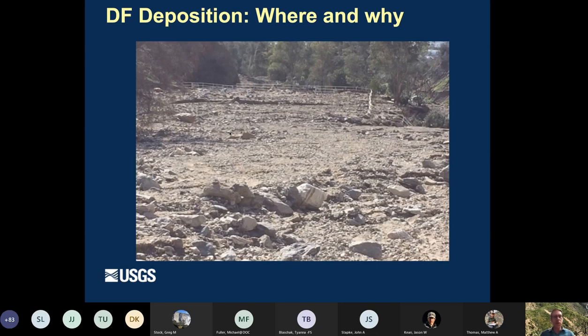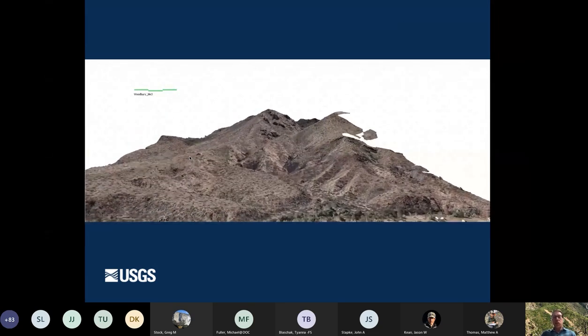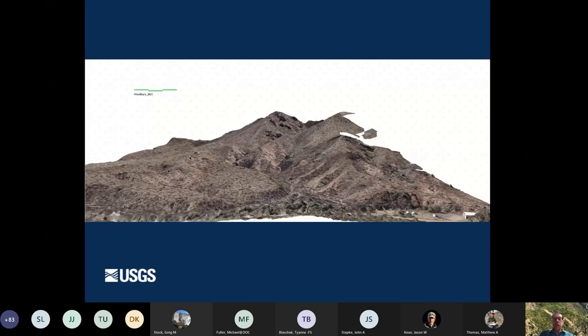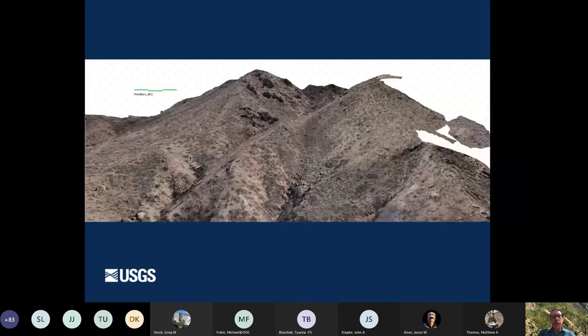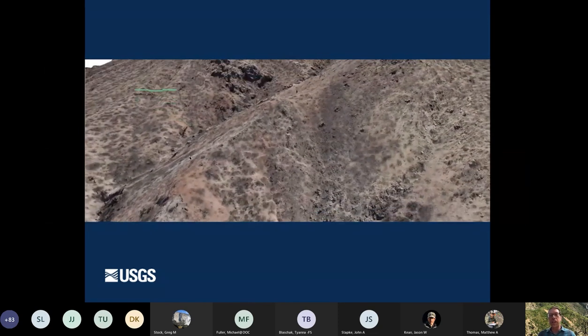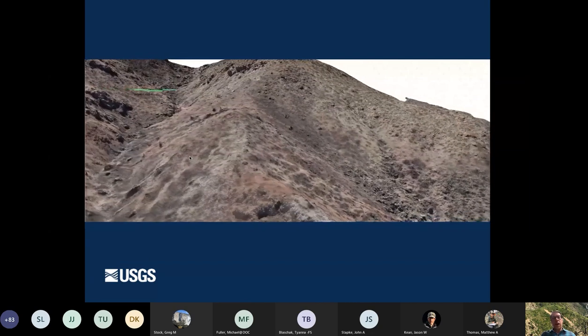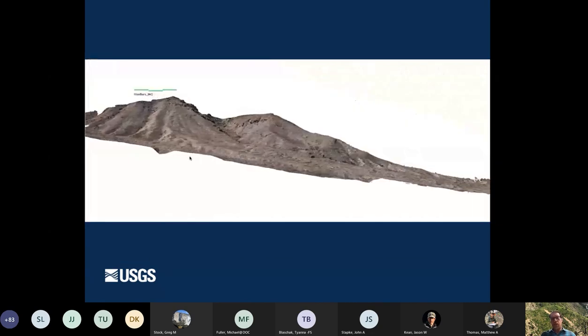Alright, so if you're keeping score at home, we're about halfway through because next I'm going to move on to talking about debris flow deposition. And here I'm really going to concentrate on using LIDAR and structure for motion to answer the where and why of debris flow deposition. So I'll start by just showing you a structure for motion model that we made from drone imagery at the Woodbury fire. So we flew a drone over this fire right after the fire and it was really, really hot. I think it was 117 degrees. We flew the drone. We got this topography before it rained. And it was really fortuitous because we were able to go back after a rainstorm and get another flight.